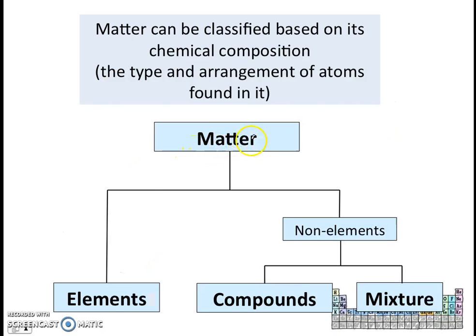Having known that all matter is made up of small particles called atoms, we can also classify matter based on the type and arrangement of atoms found inside it — or basically its chemical composition. Last week, you will have been introduced to these three terms: elements, compounds, and mixtures.